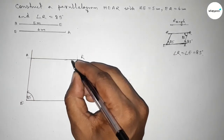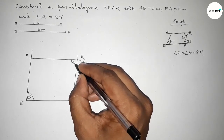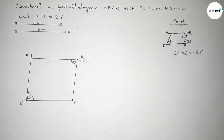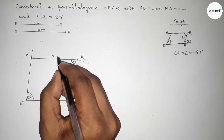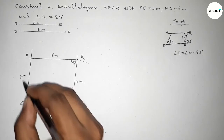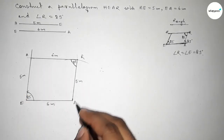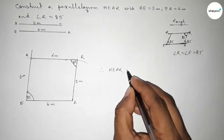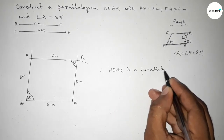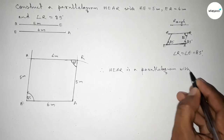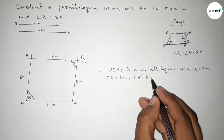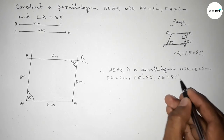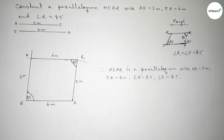So we got a parallelogram. This angle is also 85 degree, this side is 6 centimeter and the opposite side is equal and parallel at 6 centimeter, this side is 5 centimeter and the opposite side is equal and parallel at 5 centimeter. Therefore HEAR is a parallelogram with HE equal to 5 centimeter, EA equal to 6 centimeter, angle R equal to 85 degree, and angle E equal to 85 degree. That's all, thanks for watching. If this video is helpful to you then please share it.